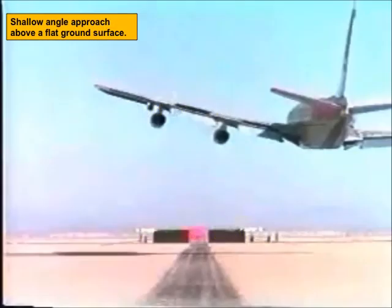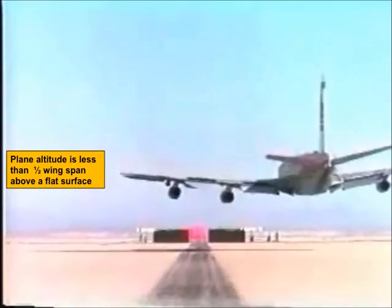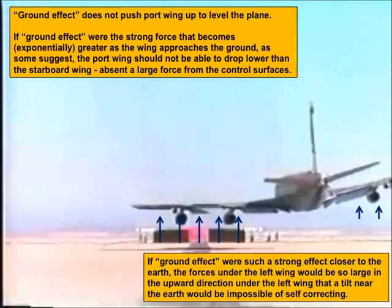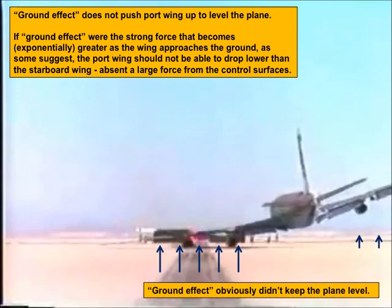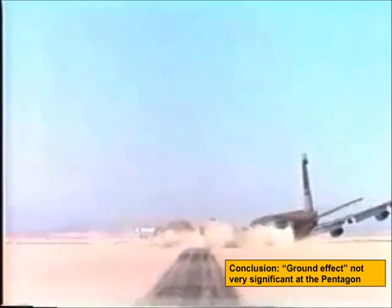Here is a picture of a shallow angle approach above a flat surface. The plane is about a half wingspan above the flat surface. Here the plane is less than half a wingspan above the surface, and it's not getting popped up. Here the left wing is closer to the ground than the right wing. Some have suggested the ground effect increases exponentially as you approach the ground, which should prevent one wing from dropping lower than the other — that a tilted plane should self-correct to remain level close to the ground. But that's not happening. One wing continues to get lower, and now one of the engines is starting to drag on the ground.